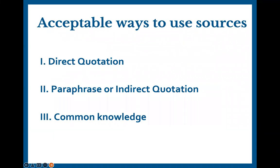While we are unlikely to get sued over our research papers, we can still get into quite a bit of trouble for not citing our sources properly, including getting an F on the paper or potentially failing the class. In order to avoid this, we need to first properly incorporate information into our papers. We do this in two ways: direct quotation and paraphrase, otherwise known as indirect quotation. There is some information that is so well known that it does not require citation, and that is referred to as common knowledge. We will examine each of these in turn and look at examples.